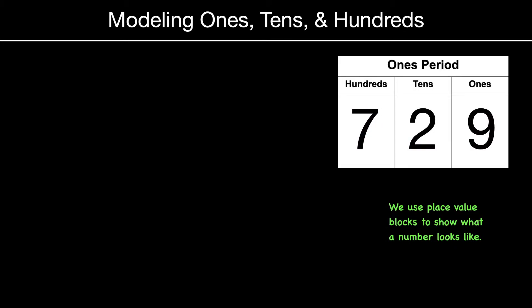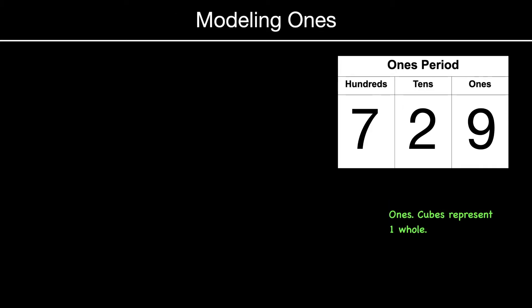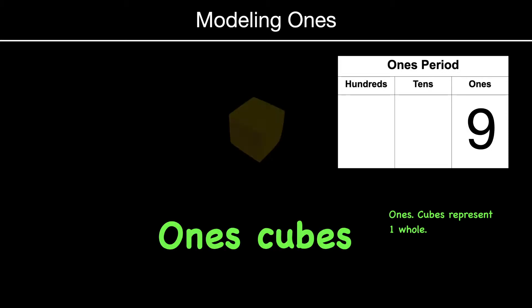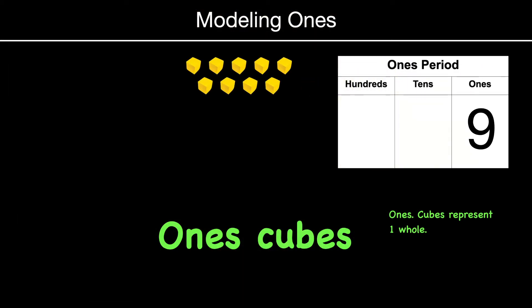So we can model ones, tens, and hundreds using place value blocks. So we'll get rid of the hundreds and the tens. Let's start with the nine ones. Ones are shaped with one cubes, and one cubes would look like that. So that would be nine.